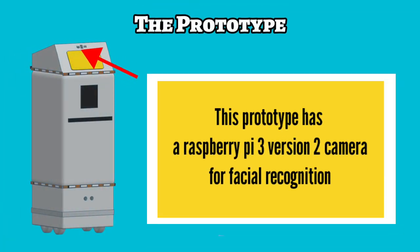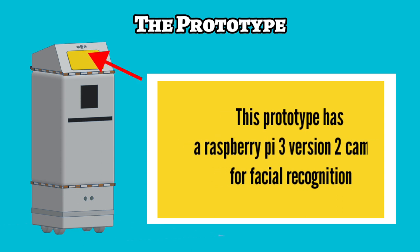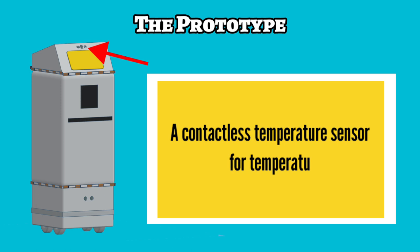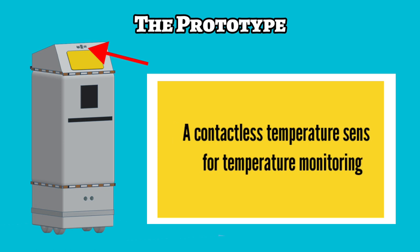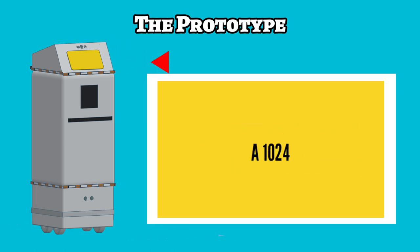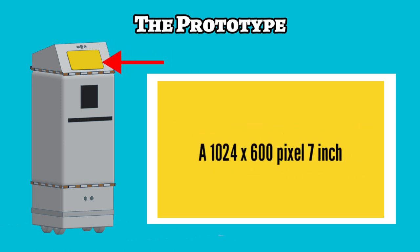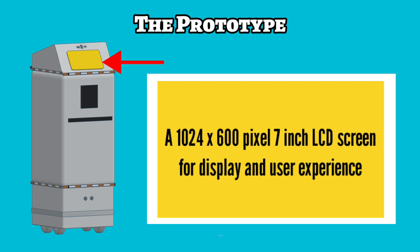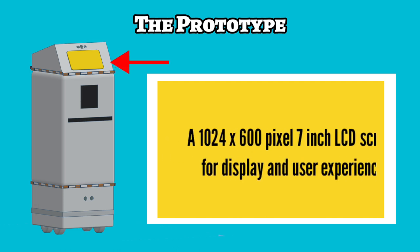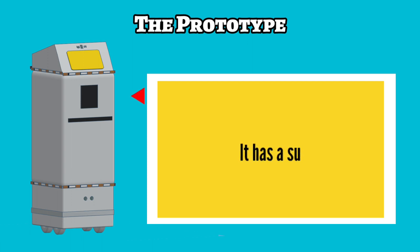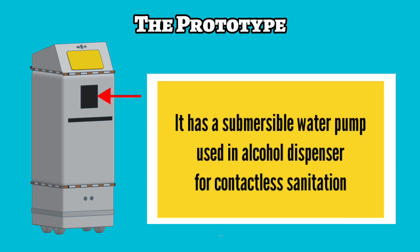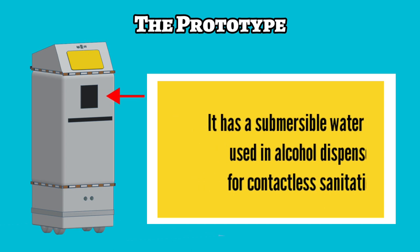This prototype has a Raspberry Pi 3, a version 2 camera for facial recognition, a contactless temperature sensor for temperature monitoring, a 1024 by 600 pixel 7-inch LCD screen for display and user experience, and a submersible water pump used in an alcohol dispenser for contactless sanitation.